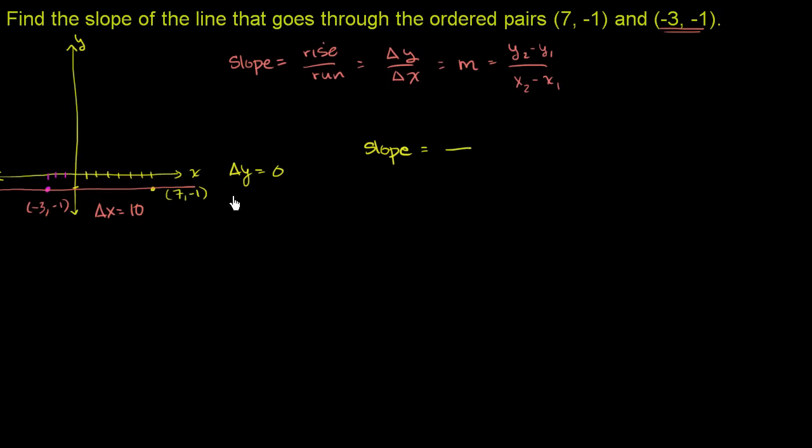So the slope here is going to be, when we run 10, what was our rise? How much did we change in y? Well, we didn't rise at all. We didn't go up or down. So the slope here is 0.